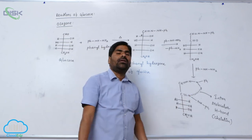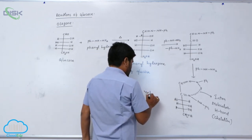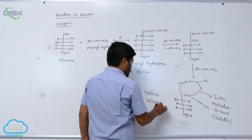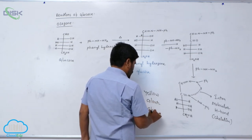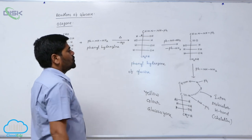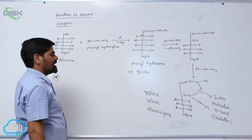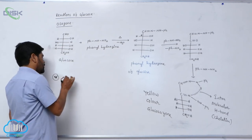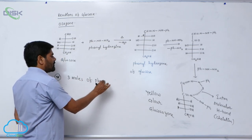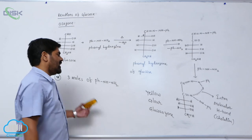If you add another mole of phenylhydrazine, there is no reaction. The product is a yellow color precipitate known as glucosazone. Only 3 moles of phenylhydrazine are required in osazone formation.